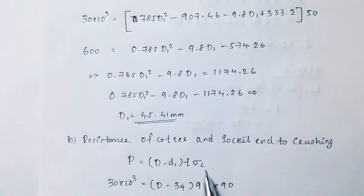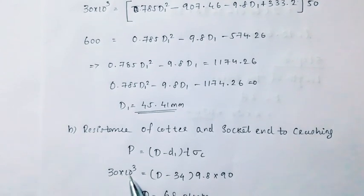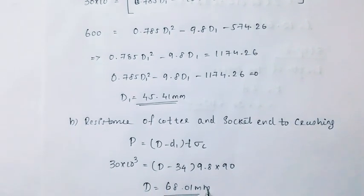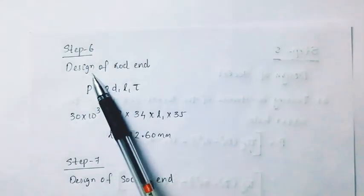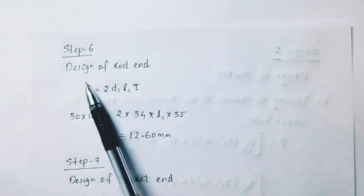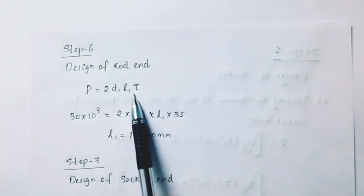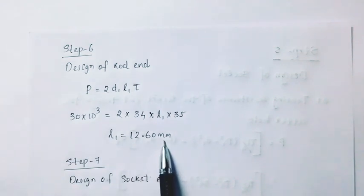Step 7 is to design the rod end. Formula: 2 into D1 into L1 into tau. Solving for L1 gives L1 equal to 12.60 mm.